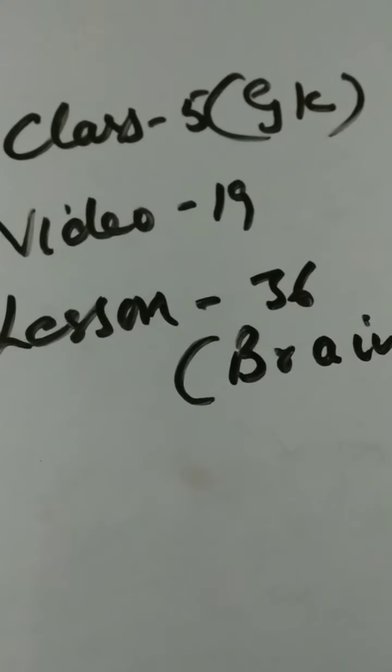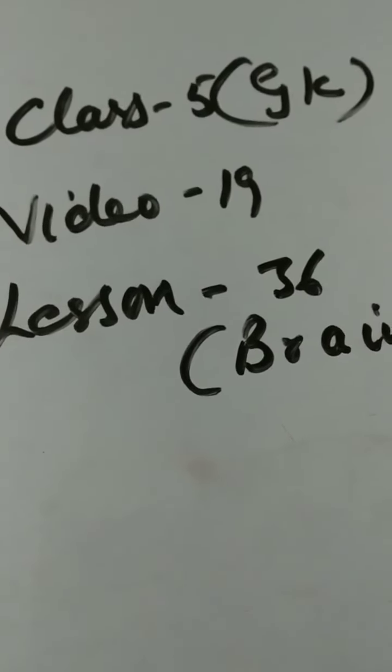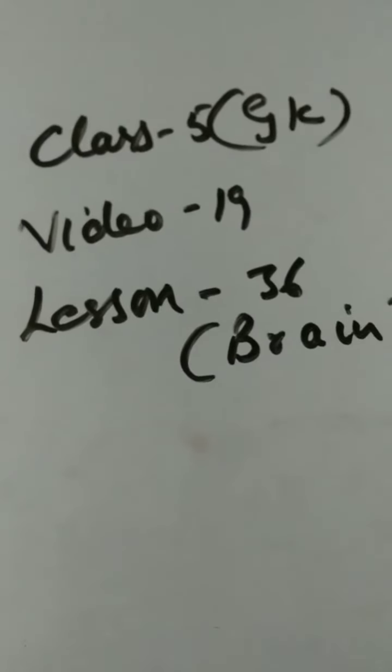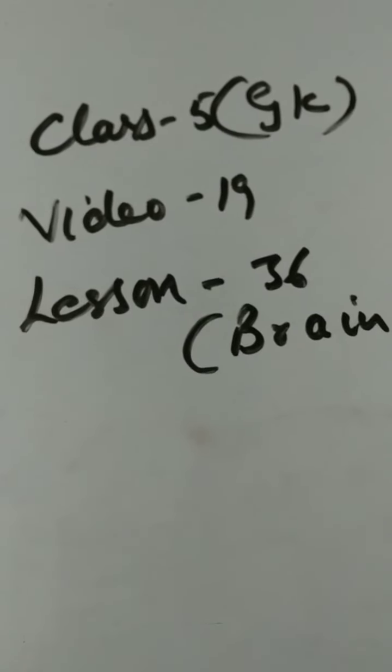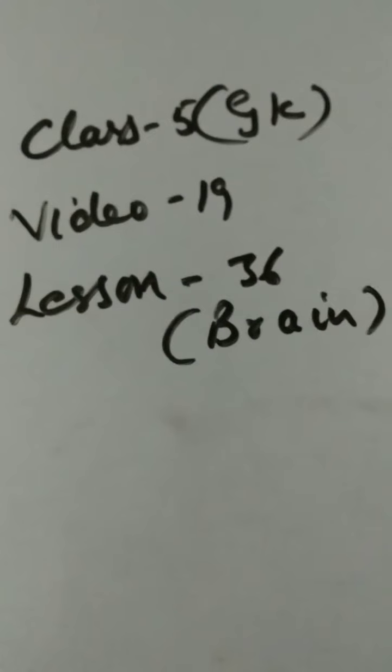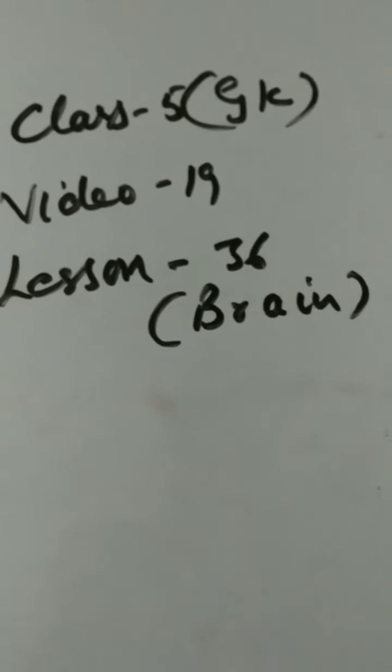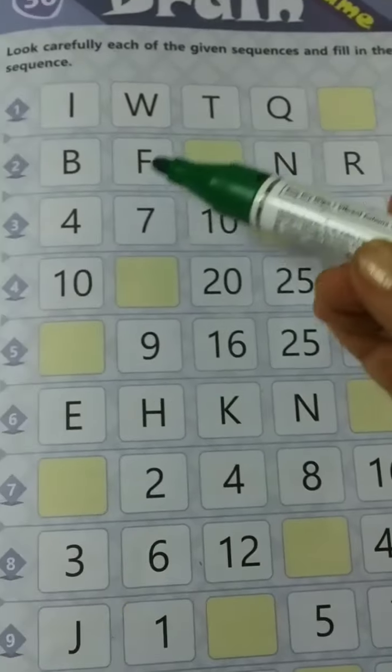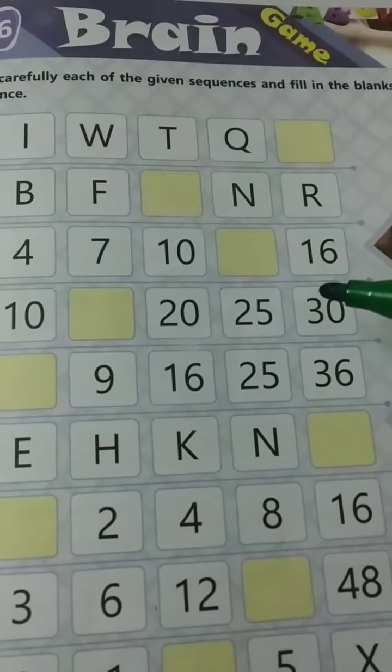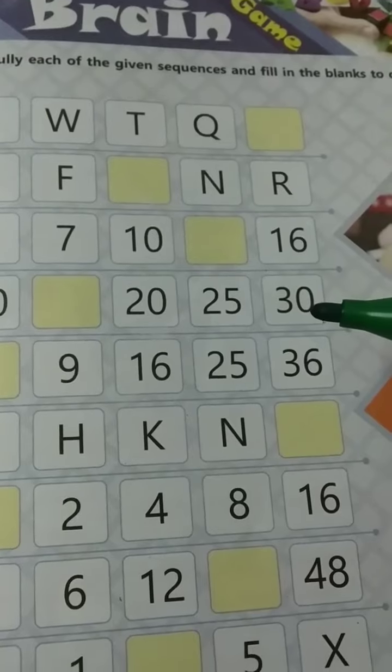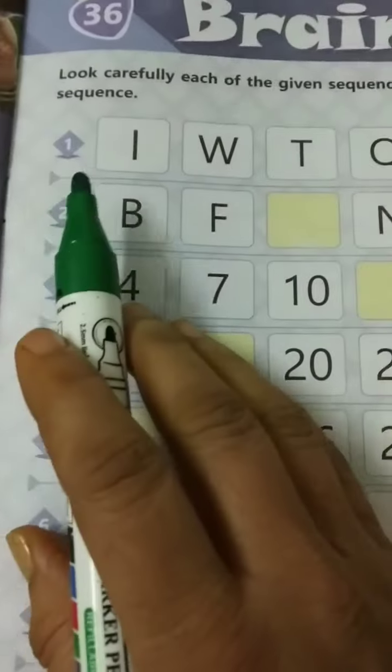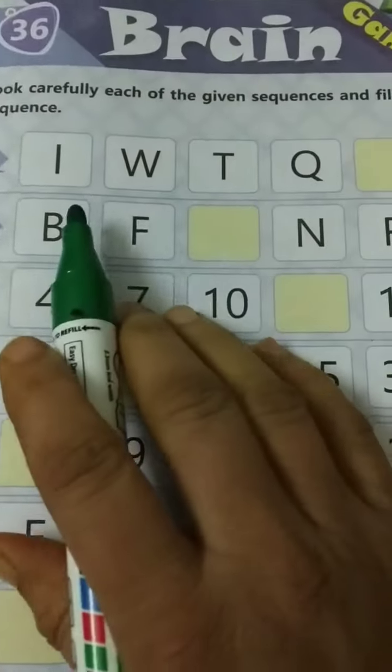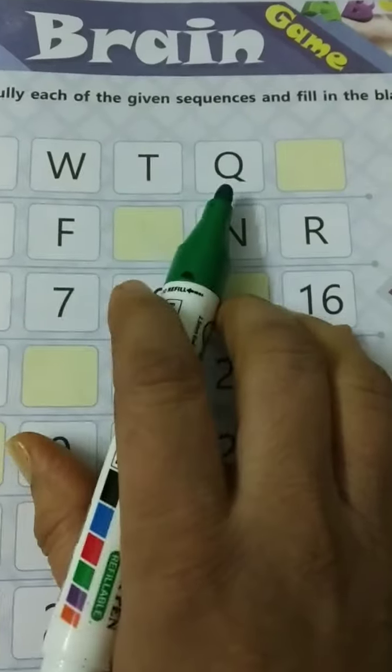This is video number 19 of class 5 GK, and in this video we will discuss chapter number 36, Brain Game. We have to fill all these given blanks in sequence. See the first one: I W T Q and dash.